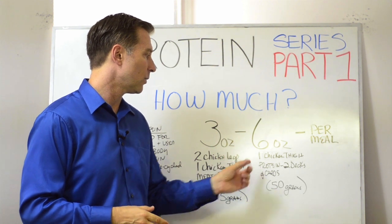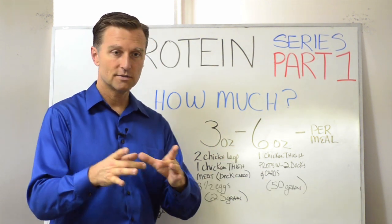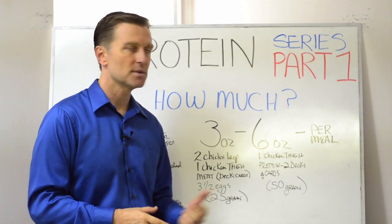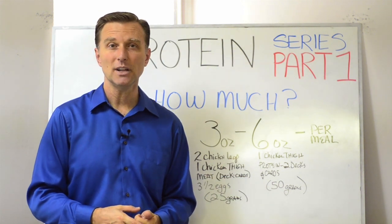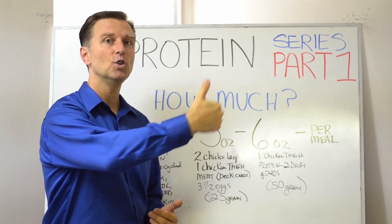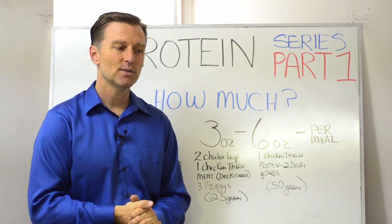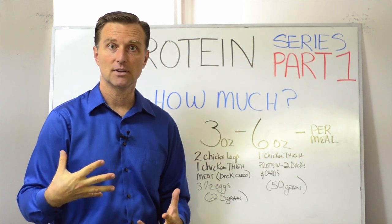And then six ounces, that would be like one chicken thigh or just double, two decks of cards, right? That's 50 grams of protein. But the majority of people consume way too much protein, and what happens is that protein ends up harming the liver over time.